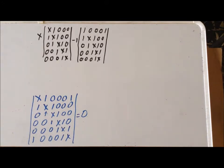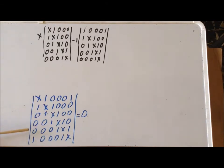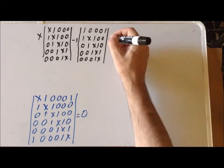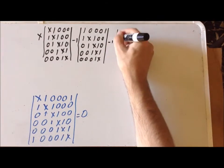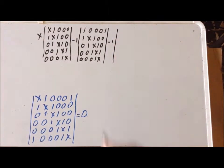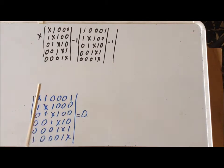Our second coefficient is 1. Since we alternate sign from positive to negative as we go down the column, this has a coefficient of minus 1. The relevant determinant that multiplies it is formed by omitting the second row and the first column. Since the next three coefficients are all 0, we can omit those terms. Our last term has a coefficient of minus 1 — alternating positive, negative, positive, negative, positive, negative.